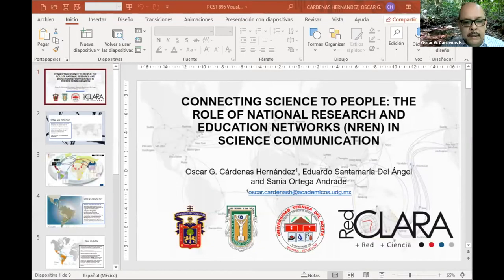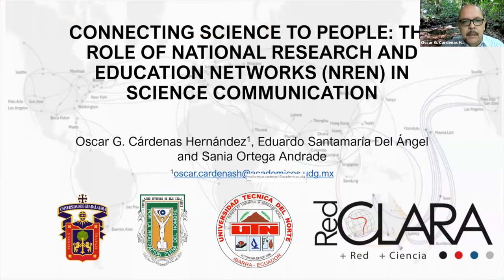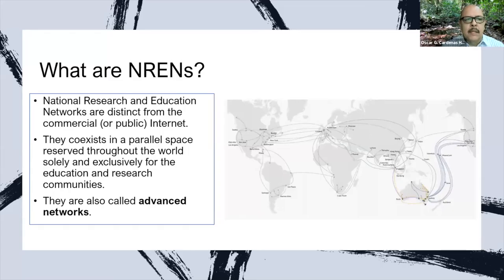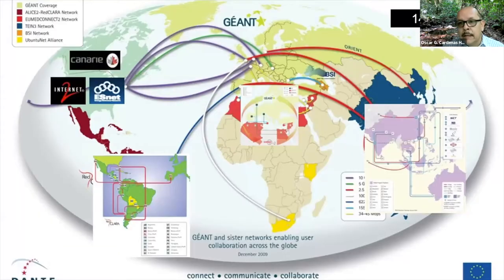Thank you, Marina. I'm going to share my screen so I can show the slide. I'm going to speak about national research and education networks. But what are these networks? National research and education networks are distinct from the public automation of the internet. They coexist in a parallel space which is reserved solely for the education and research communities. They are also called advanced networks, and in the world there are more than 140 networks.